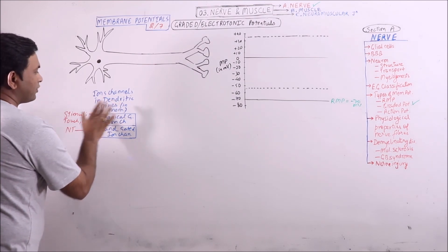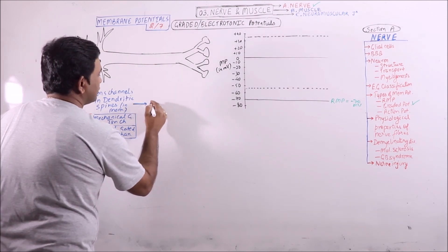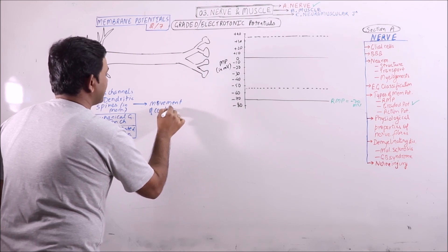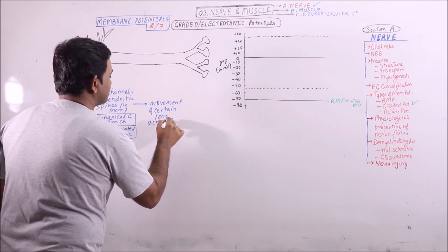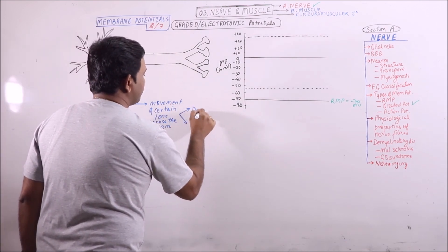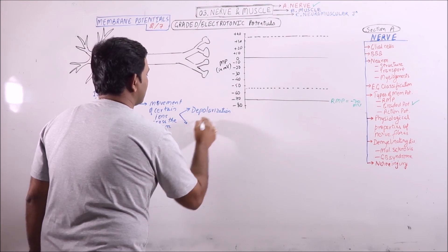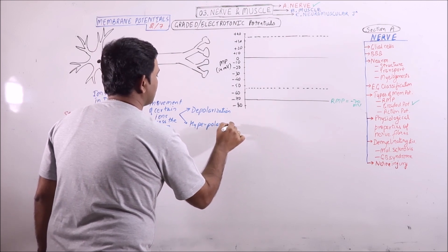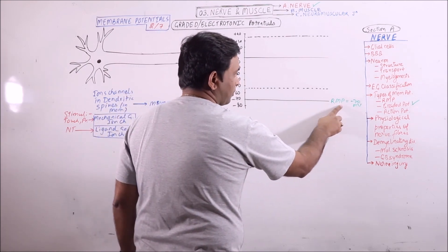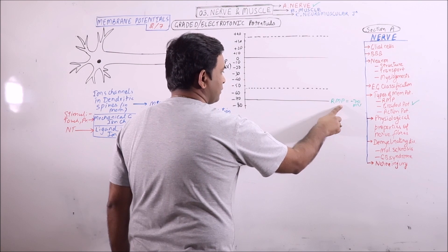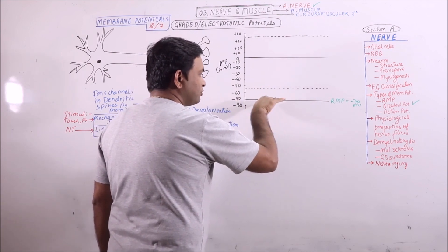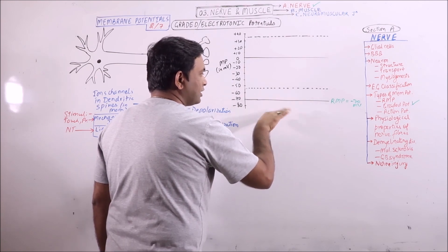When the ion channels in dendritic spines are stimulated, these result in movement of certain ions across the membrane. This movement results either in depolarization or hyperpolarization. Any movement of cations or anions which results in rising of membrane potential above minus 70 millivolts will result in depolarization, and any movement which results in lowering of RMP below minus 70 millivolts will result in hyperpolarization.